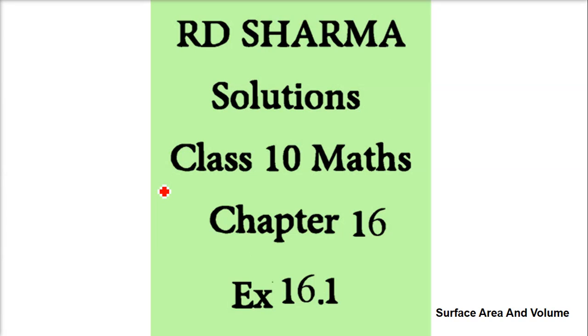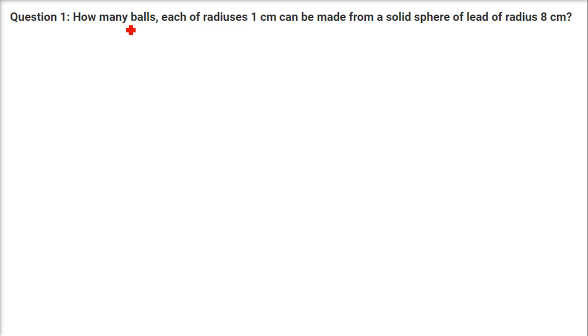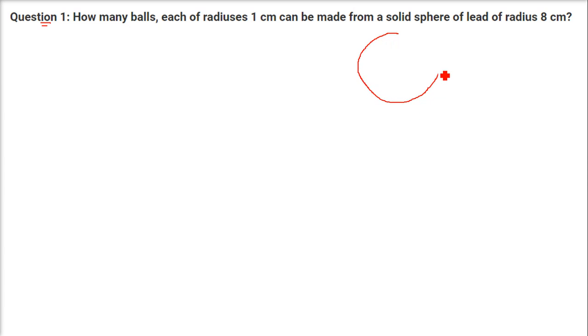We are taking R.D. Sharma solutions class 10 maths chapter 16, exercise 16.1, and this exercise is for surface area and volume. The first question is: how many balls each of radius 1 cm can be made from a solid sphere of lead of radius 8 cm?